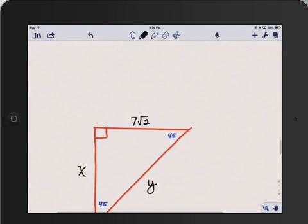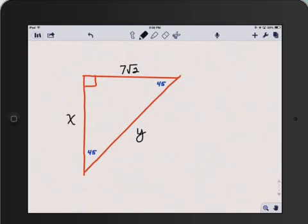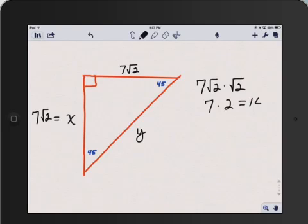And one more problem. If the leg is given as equaling a non-integer value, such as the irrational number 7 square root of 2 in this case, we follow the same procedure. The two legs are equal, so x is also equal to 7 times square root of 2. And the hypotenuse, the value for y is equal to that number 7 square root of 2 times the factor of the square root of 2. And then we have to simplify that, so we get 7 times 2, which equals 14, and that is the value for y.